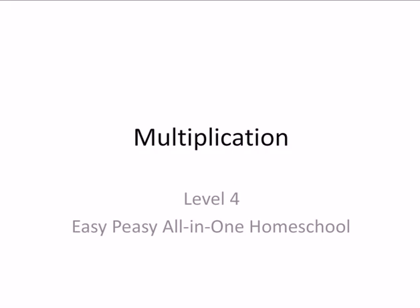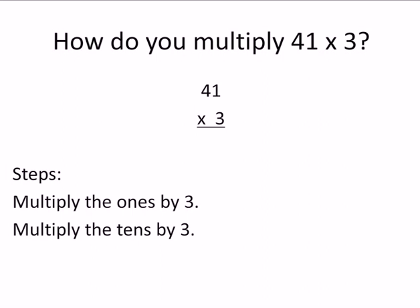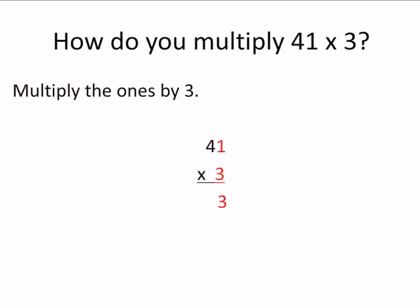Multiplication. How do you multiply 41 times 3? Our steps are: multiply the 1's by 3, and multiply the 10's by 3. So first we'll multiply the 1's by 3.